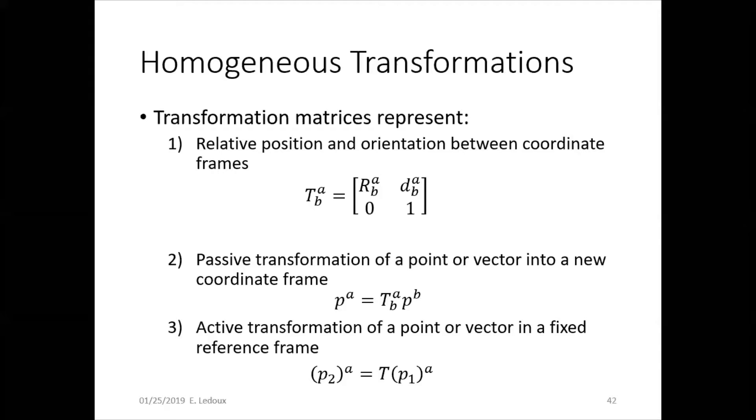Now, transformation matrices represent relative position and orientation between coordinate frames. So that's pose, position and orientation. T_b^a means transformation of b with respect to frame a. That would include the rotation and the distance that you translated relative to that original frame.